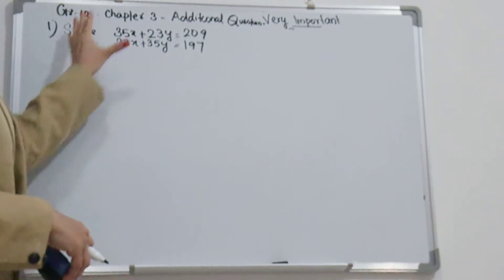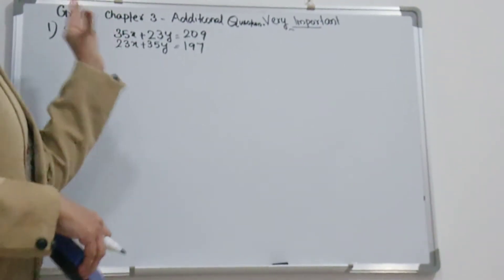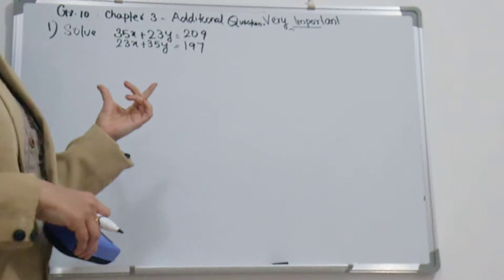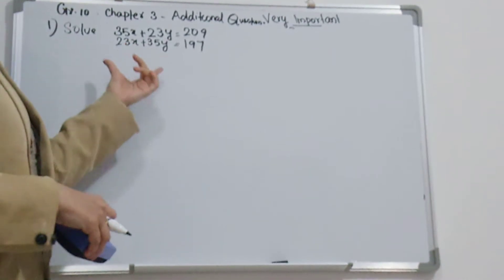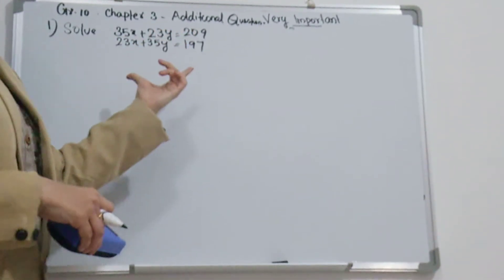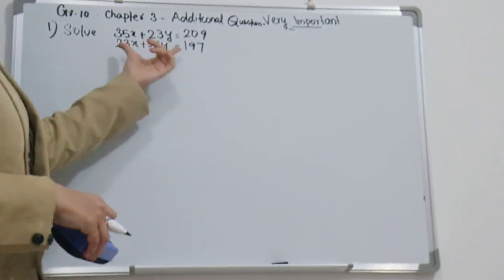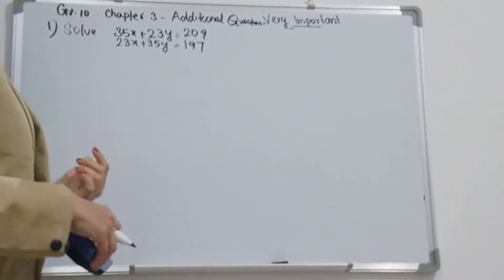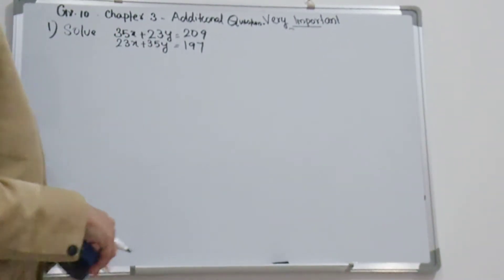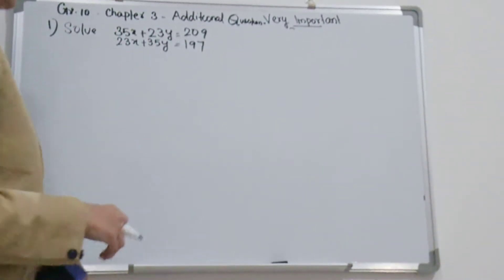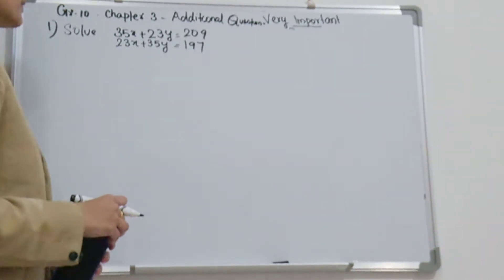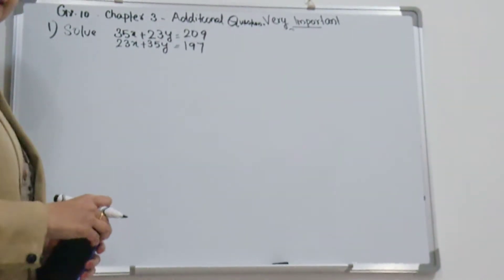Hi students, this is a very important question. This is not from your textbook, but this question will be asked in CBSE frequently. Solve the pair of equations: 35x plus 23y equal to 209, and 23x plus 35y equal to 197.